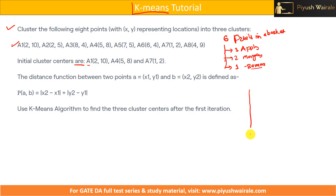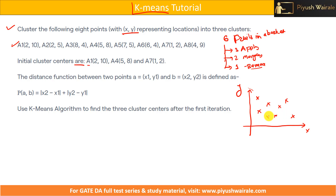What we usually do in k-means clustering: suppose I have a two-dimensional plane, x and y. I am plotting points like 2,10 somewhere here, 2,5 somewhere here, then 3,8 — 8,4 will be somewhere here. Suppose these are my eight points. Now I need to group these eight points into three cluster centers. First, I will assume any one data point as my cluster center — this one for one cluster, this one for another, and this one for another.